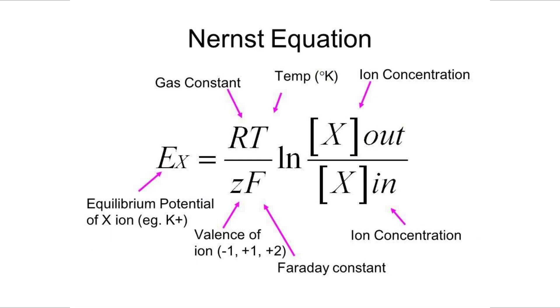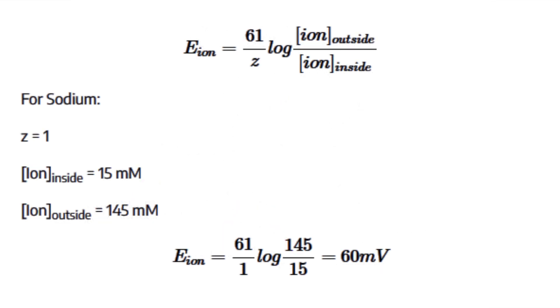Now, for those math nerds, the Nernst equation provides a way to compute the equilibrium potential for a given ion, knowing its internal and external concentrations. Now, in our example, 61 is the constant in millivolts related to physiological temperature. Z is the ion's charge, and ion outside and ion inside are, of course, the ion's external and internal concentrations. So, you can take a look at the example for sodium up on the screen.